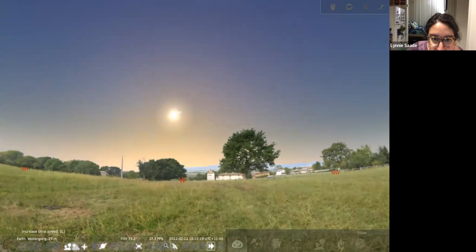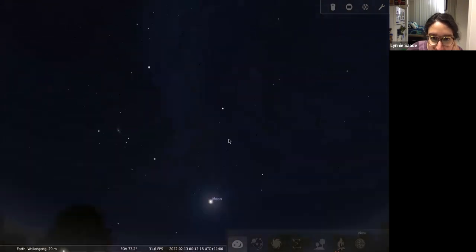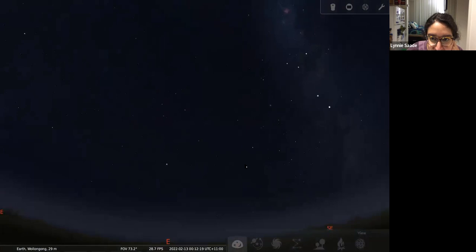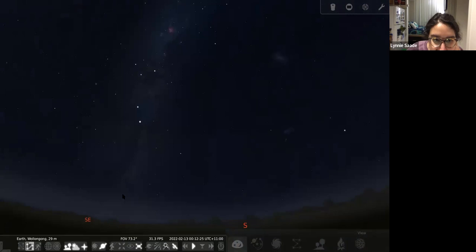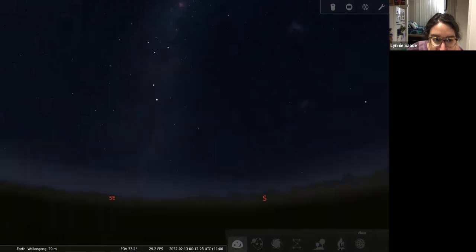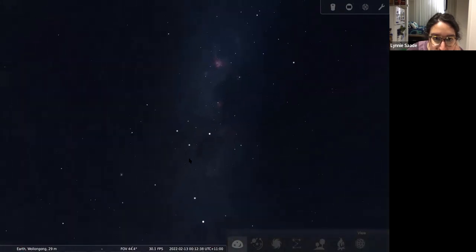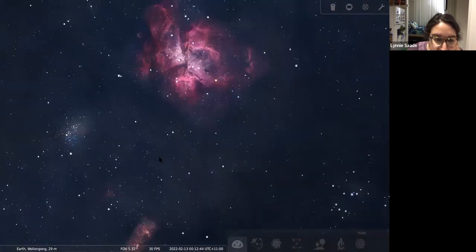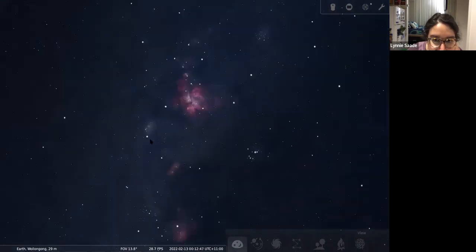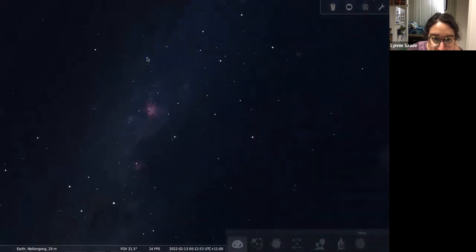And then if we step forward in time, you'll see that the stars you'll see are very different because the Northern and Southern hemispheres of the sky have different stars in them. I believe this is the Carina nebula, but the labels aren't showing for some reason. But that's something that you can only see from the Southern hemisphere.